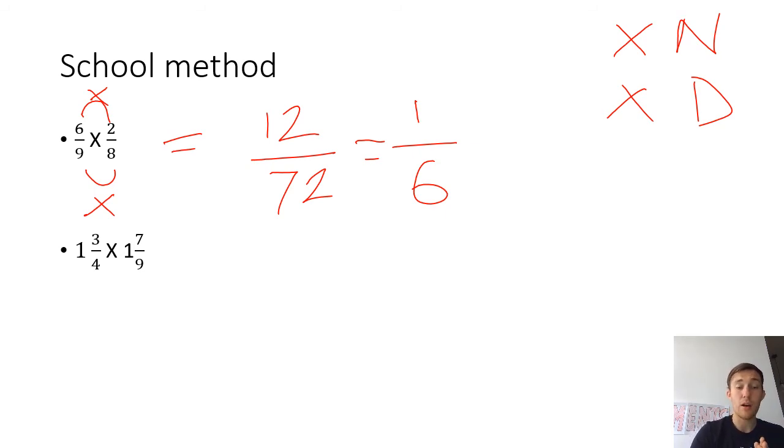Other questions you might get today are where you might have to multiply mixed numbers together. And a bit like the adding and subtracting yesterday, we need to first of all convert them into improper fractions. Because then we can just use our method of multiply the numerators, multiply the denominators. So I've got one whole and three quarters. So my one whole is going to be the same as four quarters. And I've got three quarters left over. So that's going to be the same as seven quarters. And then I've got one whole and seven ninths. So my one whole is going to be the same as nine ninths. And I'm going to add my seven ninths to it. So that's going to be the same as 16 ninths.